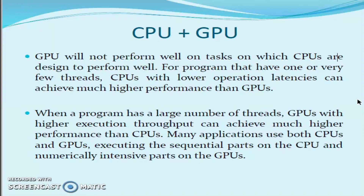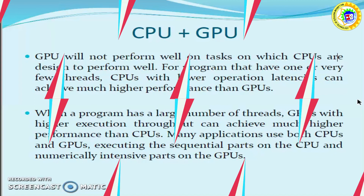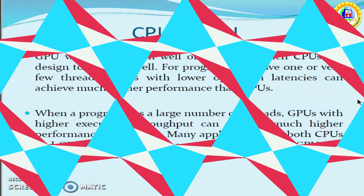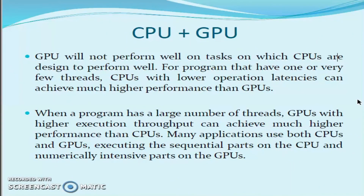For programs that have one or very few threads, a CPU with lower operation latencies can achieve much higher performance than a GPU. When a program has a large number of threads, a GPU with higher execution throughput can achieve much higher performance than CPUs. Many applications use both CPUs and GPUs, executing sequential parts on the CPU and numerically intensive parts on the GPU. This is all about the fundamentals of GPU. Thank you.